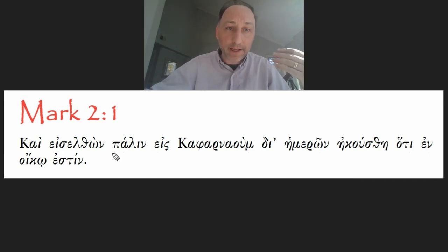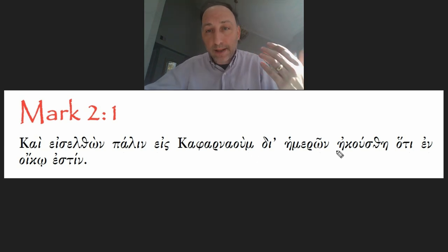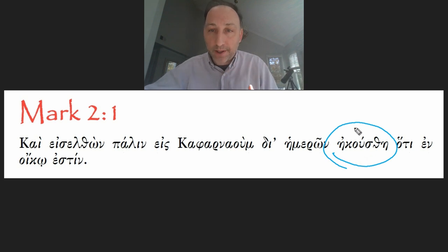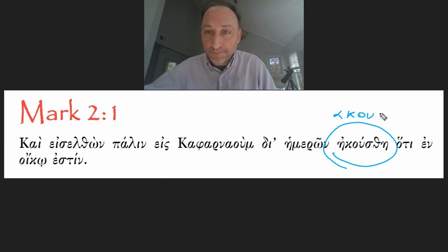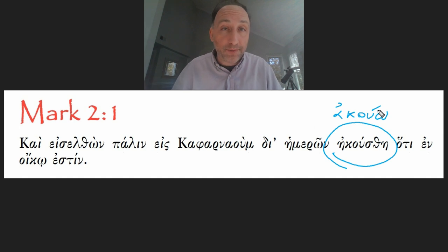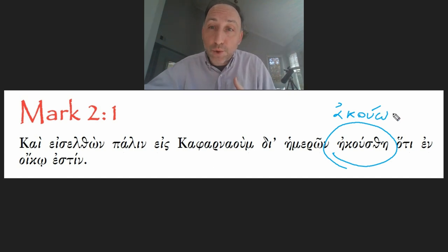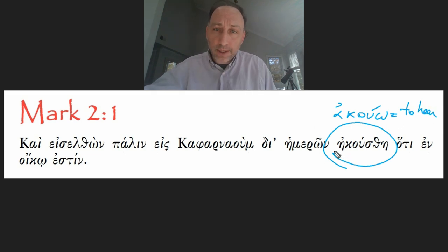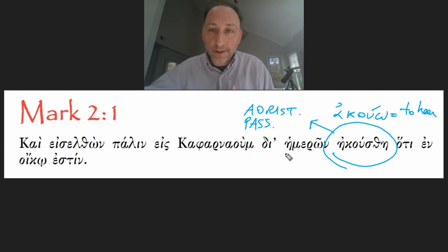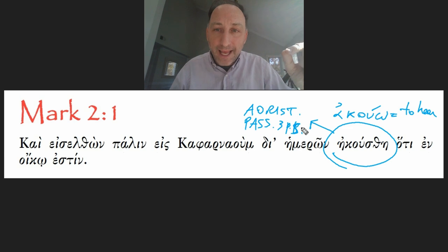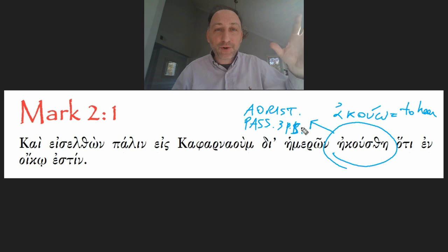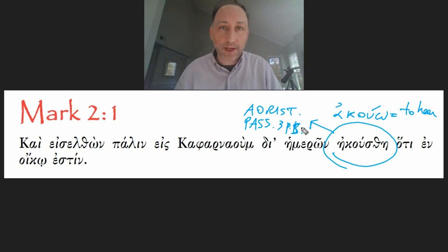The main verb of the verse is ἠκούσθη, which comes from the verb ἀκούω — from which the English term 'acoustic,' for example, comes from — having to do with listening and hearing. ἀκούω means 'to hear.' In this form, ἠκούσθη is conjugated in the aorist tense in the passive voice, third person singular, so it literally means 'it was heard.' So: after entering again into Capernaum after a few days, it was heard — an impersonal way of saying 'they heard.'